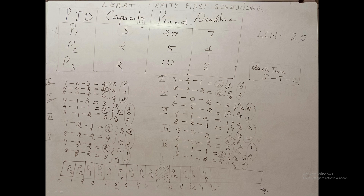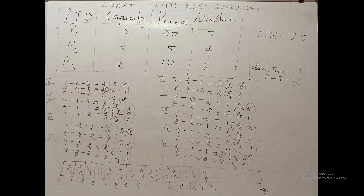At the third iteration with T=2, we consider only P1 and P3. P1 slack = 7 − 2 − 3 = 2; P3 slack = 8 − 2 − 2 = 4. P1 has the least slack time, so P1 is selected. After one unit of execution, P1's remaining capacity goes from 3 to 2, and both P1 and P3 now have 2 units of capacity remaining.